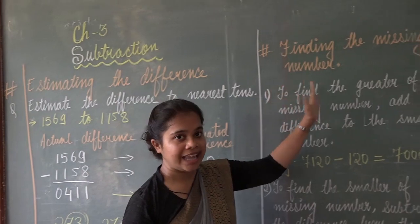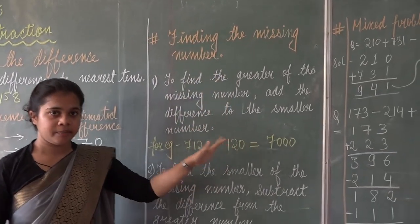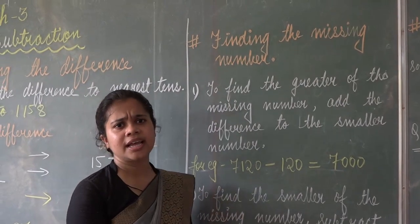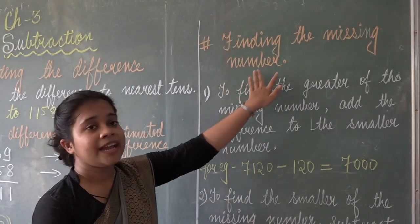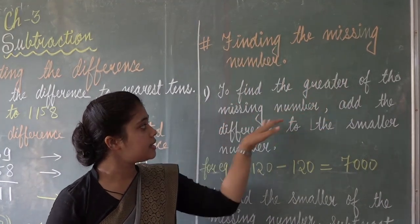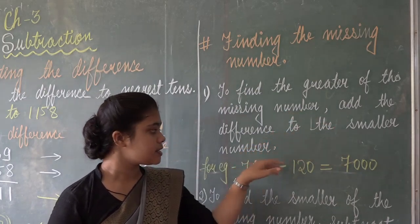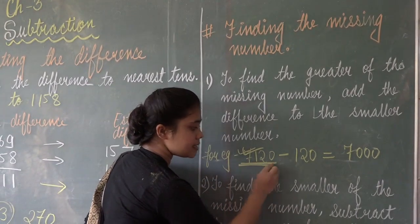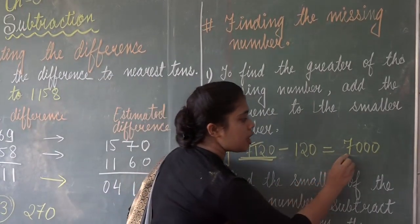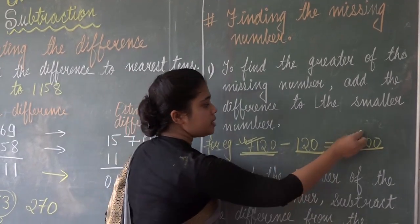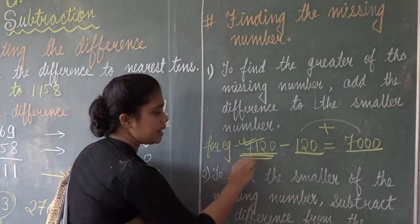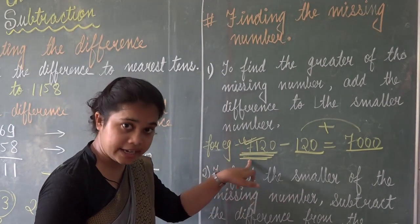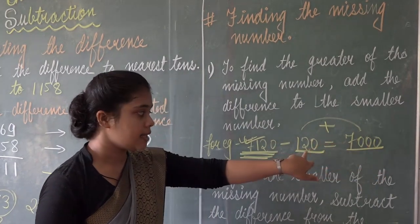Now let us move to the next part — finding the missing number. You may get such questions in your assignment or in day-to-day life. To find the greatest of the missing numbers, add the difference and the smaller number. You are going to add these two numbers and then you will get the greatest of the missing number.